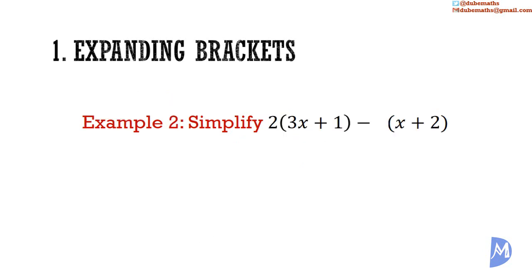Example 2. Simplify: 2 multiplied by (3x plus 1), subtract (x plus 2). Expanding brackets: 2 multiplied by 3x is equal to 6x. 2 multiplied by positive 1 is equal to positive 2. And we have a negative being multiplied by the bracket (x plus 2), which is the same as negative 1 being multiplied by (x plus 2). Negative 1 multiplied by x is equal to negative x. Negative 1 multiplied by 2 is equal to negative 2.